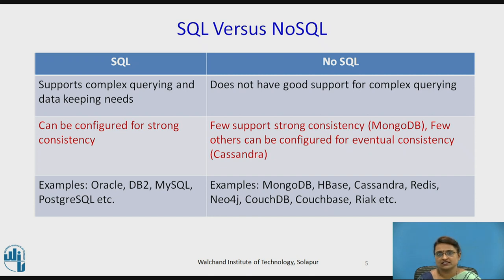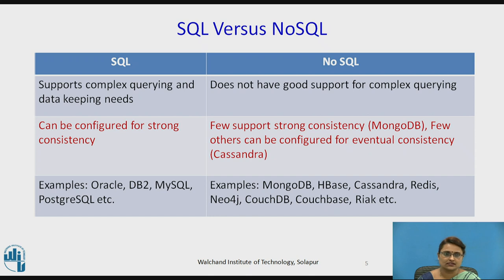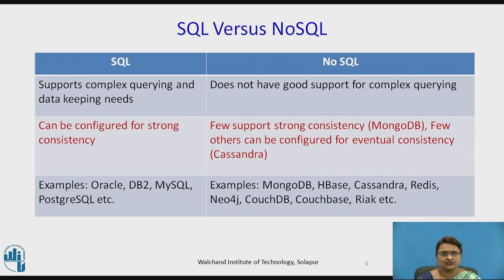SQL is strongly configured for strong consistency. For NoSQL, support for strong consistency exists in MongoDB, but others like Cassandra are eventually consistent. Examples of SQL include relational databases like Oracle, DB2, MySQL, and PostgreSQL. NoSQL examples include MongoDB, HBase, Cassandra, CouchDB, and Neo4j — each having its own different format for storing data.